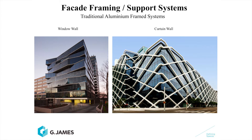Traditional glazing uses an aluminium frame for probably 95% of facades. Window walls and curtain walls are the two major facade systems that are used on buildings these days in modern times. We'll explore that in detail in the following video. Before we go there, let's have a look at different types of framing systems.